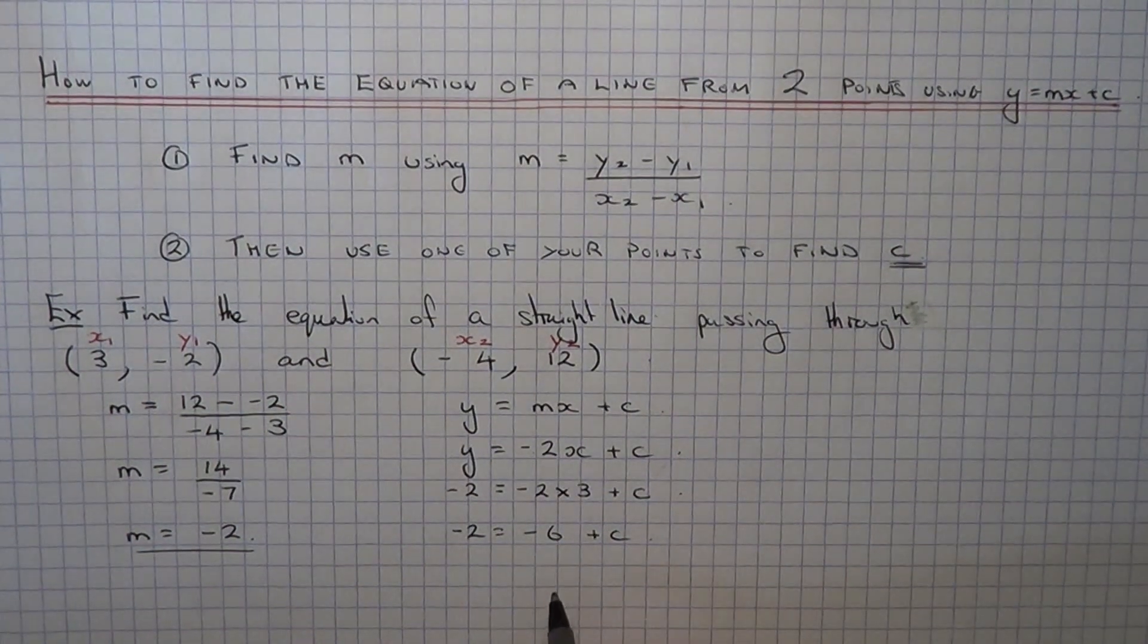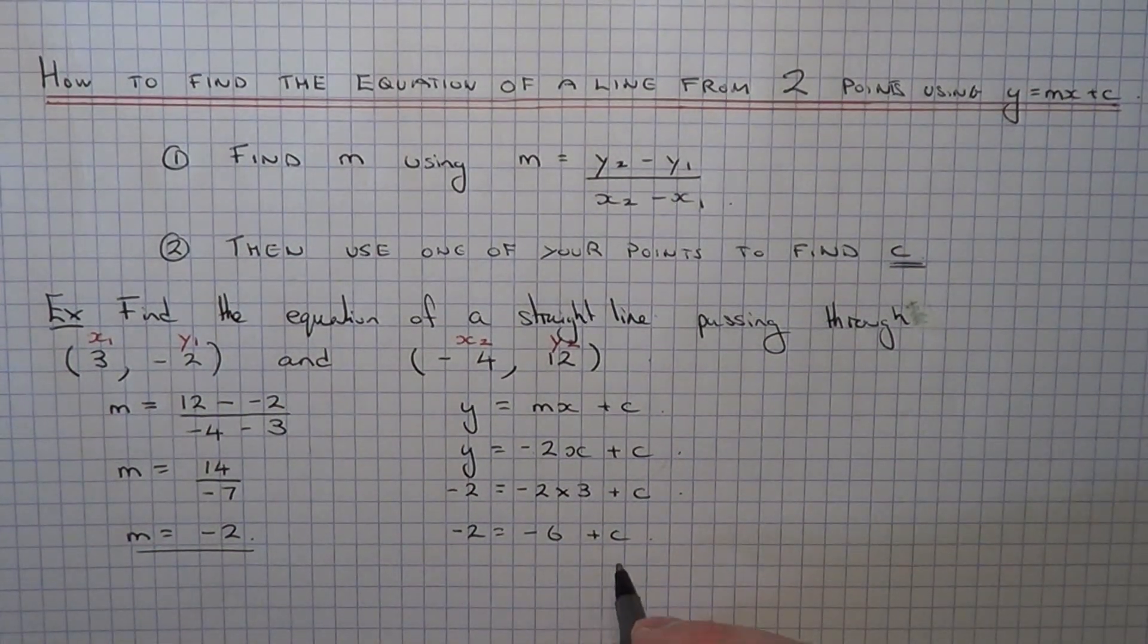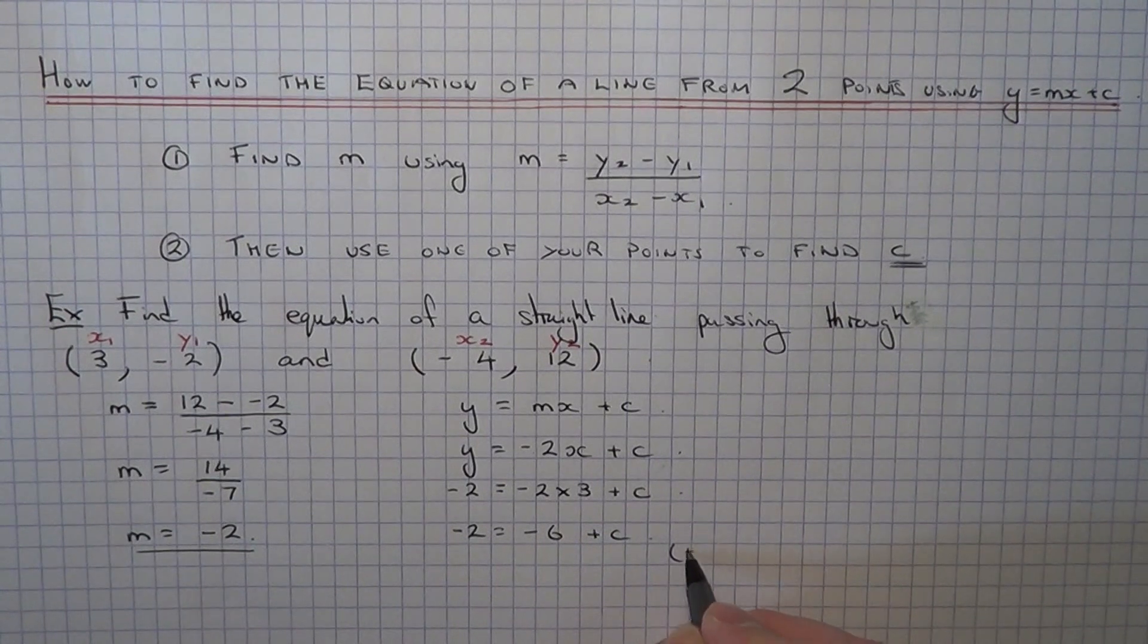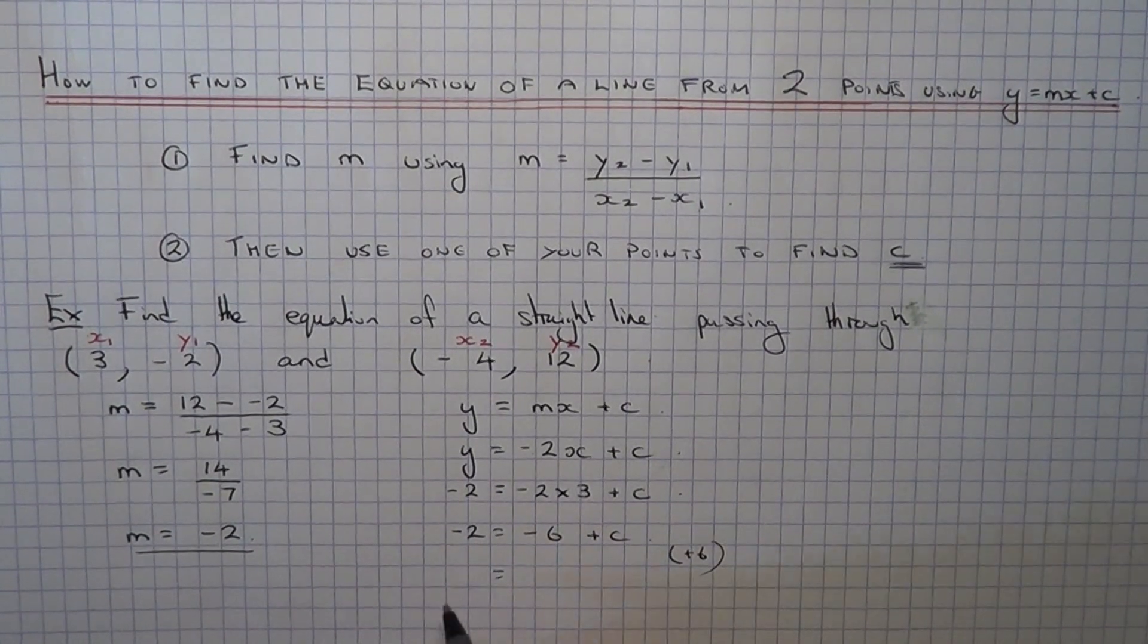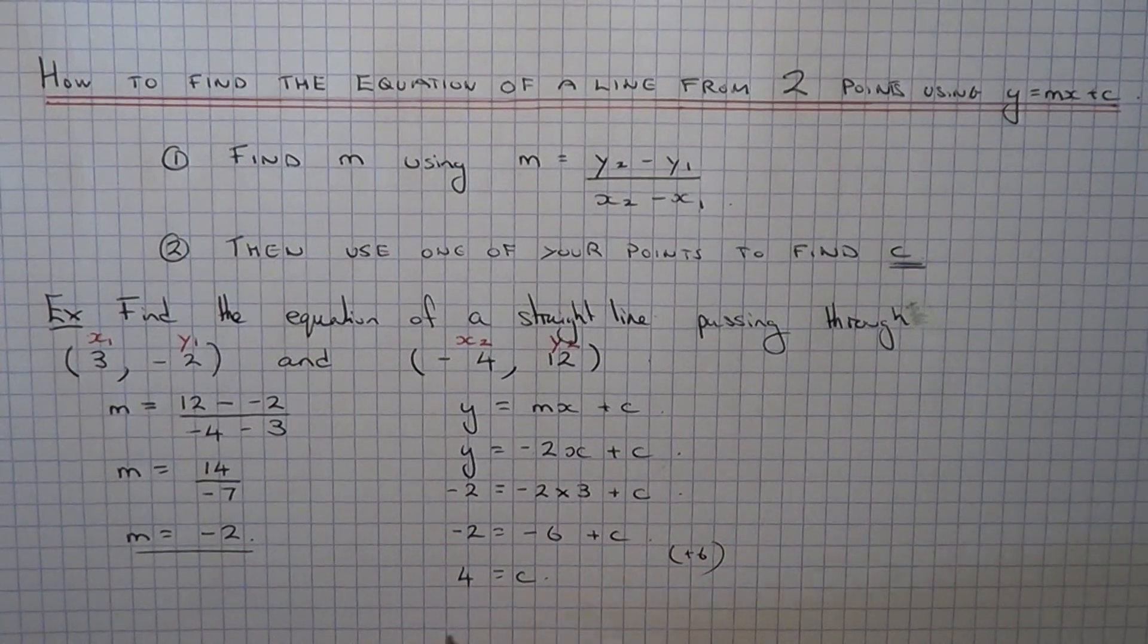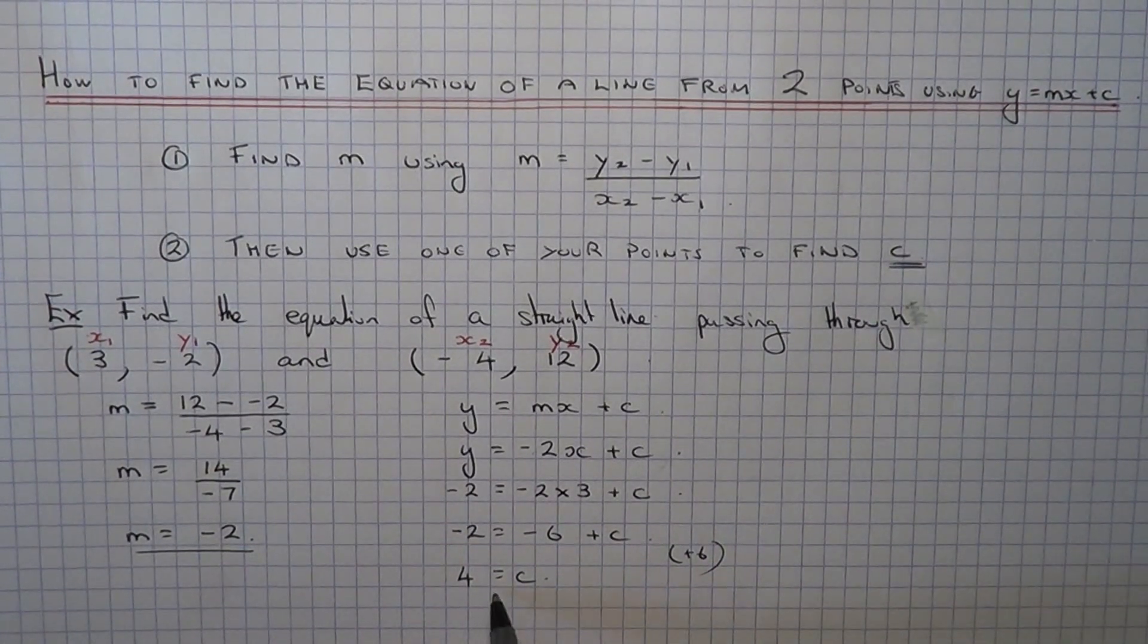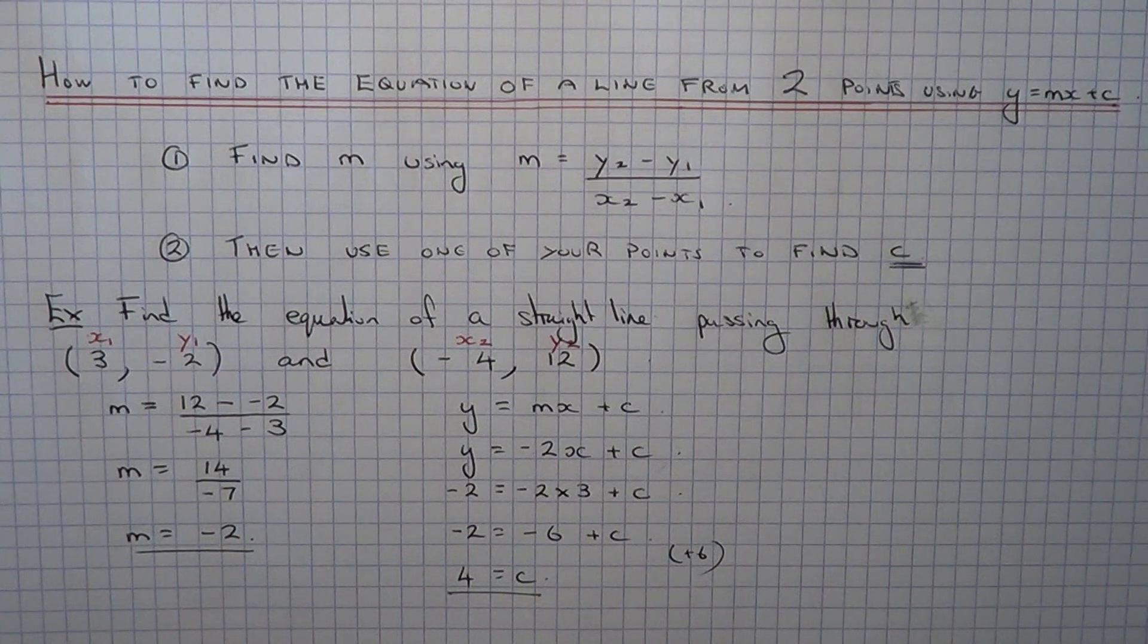So we just need to solve this equation now to figure out c. So I get rid of the minus 6 by adding 6 to both sides. So minus 2 and 6 is 4. So that will give us the intercept. So c is equal to 4.